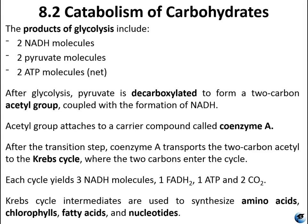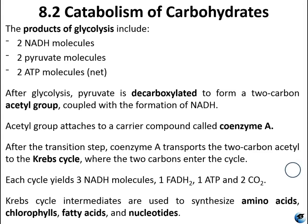After glycolysis, the pyruvate becomes decarboxylated and forms an acetyl group, coupled with the formation of NADH — an example of exergonic and endergonic reactions being coupled. This acetyl group attaches to coenzyme A, a carrier compound. This is the transition step between glycolysis and the Krebs cycle. Coenzyme A transports the acetyl group into the Krebs cycle, where the two carbons from the acetyl group enter as substrates.